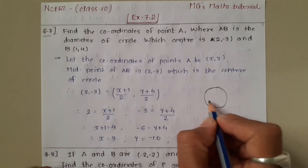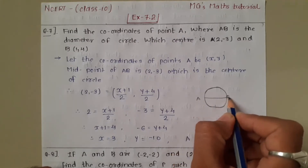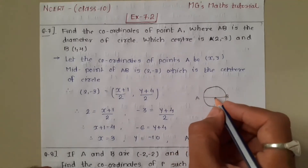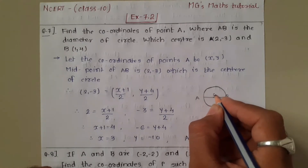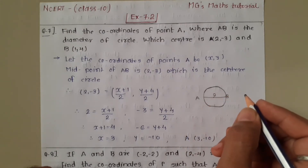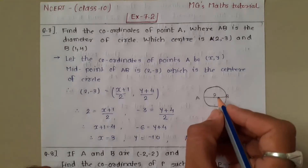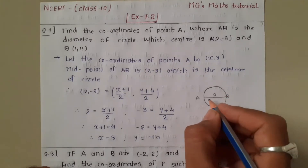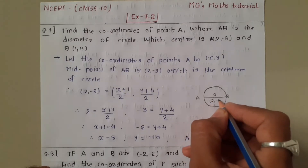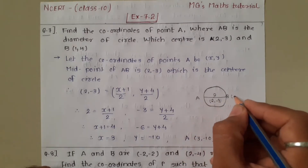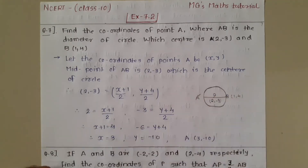AB is the diameter of the circle, and O is the center of the circle. We have two coordinates given: the coordinate of the center is (2, -3), and the coordinate of point B is (1, 4). We have to find the coordinate of A.